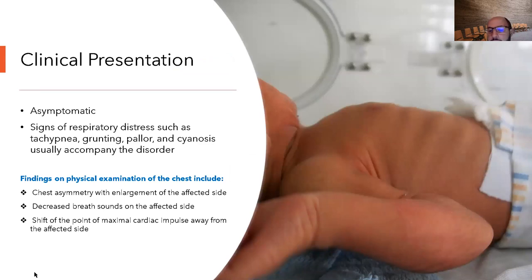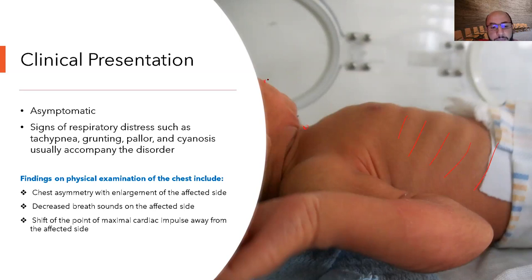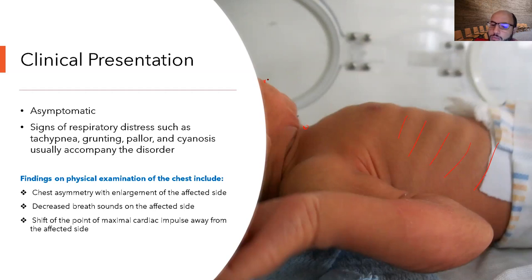Clinically, spontaneous pneumothorax can be asymptomatic, or the baby may present with respiratory distress symptoms such as subcostal retraction, intercostal retraction, suprasternal retraction, and nasal flaring. If the condition worsens or tension pneumothorax develops, watch for asymmetry of the chest, decreased air entry on the affected side, and the heart shifting away from the affected side.